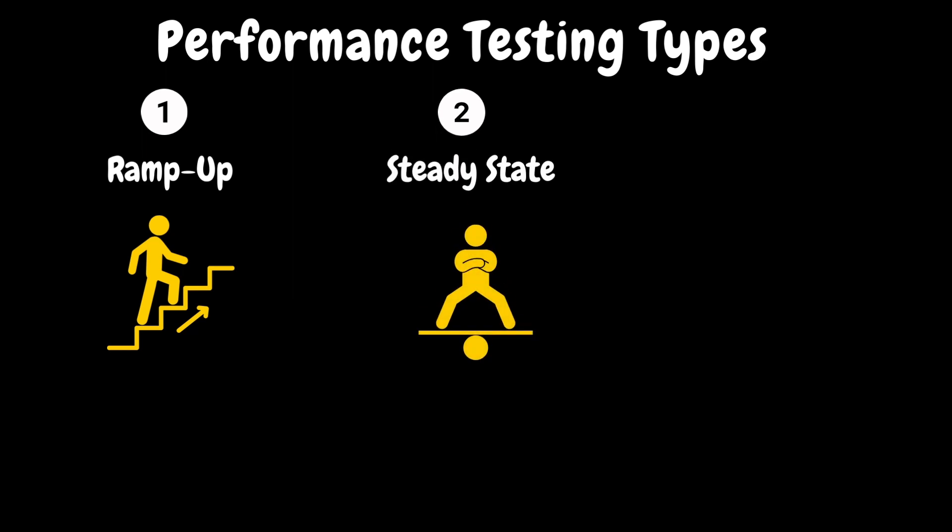The next phase is steady state. It is the phase in a performance test where the system operates under a constant and consistent load. Once the test reaches steady state, there will not be any additional users added. The total number of virtual users will continue to run the test for an extended period of time based on the type of test. This is the crucial phase where all performance metrics such as response times, throughput and error rates are closely monitored. The results from this phase will be compared against baseline or SLAs to understand the deviations.